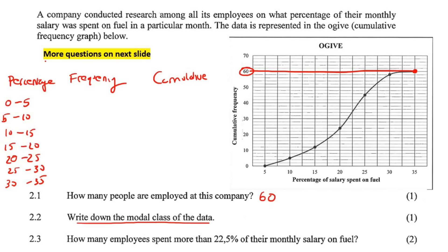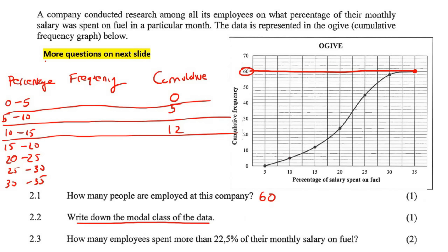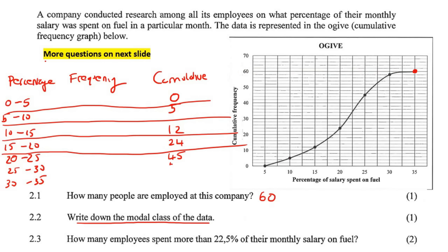I'm going to fill in the cumulative values because they're shown on the y-axis. So the cumulative for the first interval would be 0. Then for 5 to 10 it's about 5, then 12, then we make reference lines here. You wouldn't do this in a test — I'm just reversing this so you can understand where the numbers come from. Then 24, then this one is in the middle between 42 and 46, so it's going to be 45, and then 58, then 60.